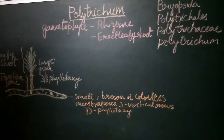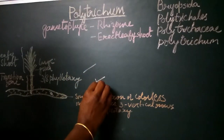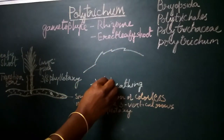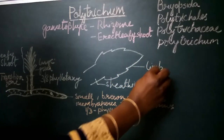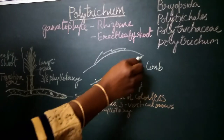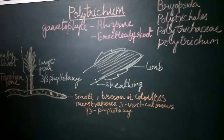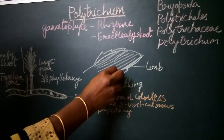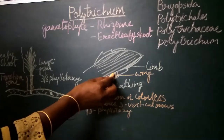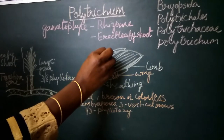If we pull out one leaf and see its structure, the leaf has a very broad leaf base called the sheathing leaf base. The upper part of the leaf is called the limb. The limb shows a very broad midrib, and this whole part is the midrib zone. The lamina or wing zone of the leaf is restricted to only one or two cells in width and a single cell in thickness.